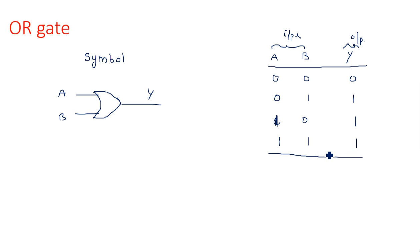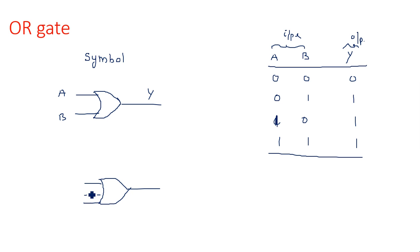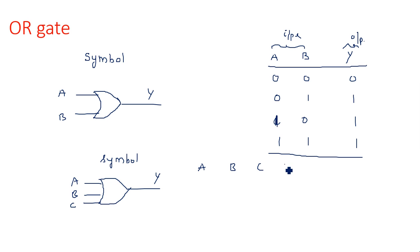In OR operation, if any one of the inputs is 1, the output is 1. If all the inputs are 0, then the output is 0. Next, we can draw the same OR gate with three inputs A, B, and C. This is the symbol for a three-input OR gate.